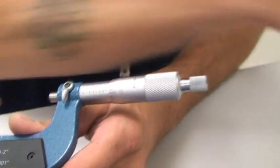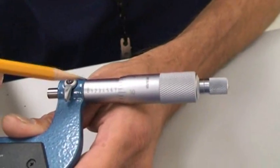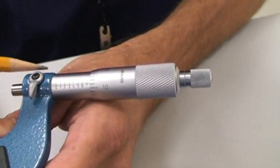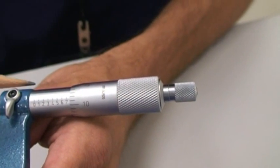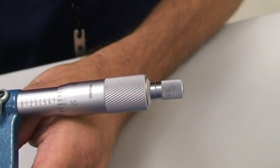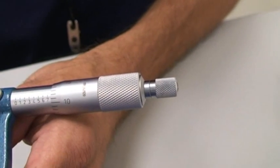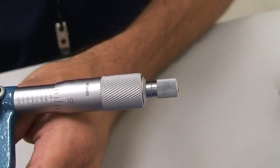This scale here shows me in tenth of an inch increments. We are past seven tenths, but not quite eight tenths. So my next number will be .700.